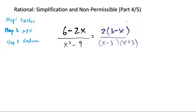Step 2. Locate the non-permissible value or values. And here, we have x minus 3 cannot equal 0, or x plus 3 cannot equal 0. So x cannot equal 3 and negative 3, NPVs.